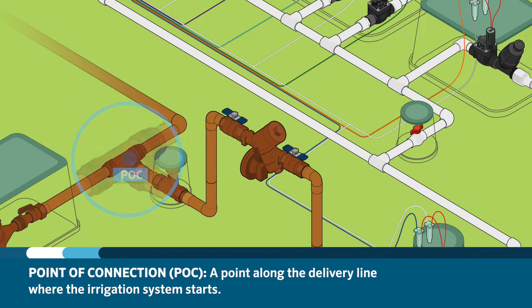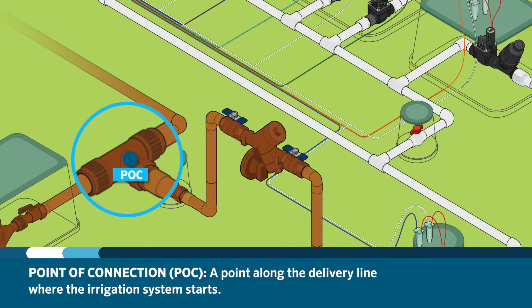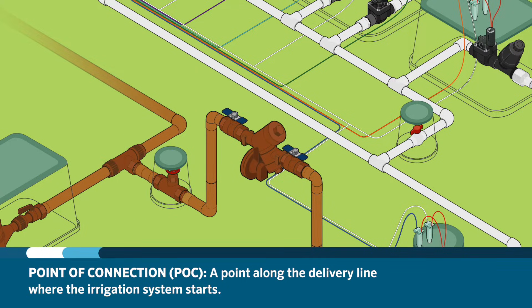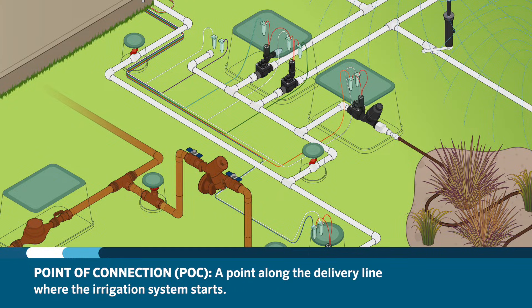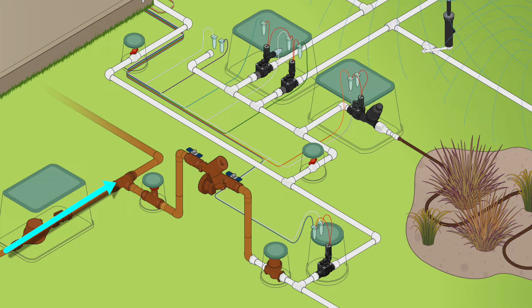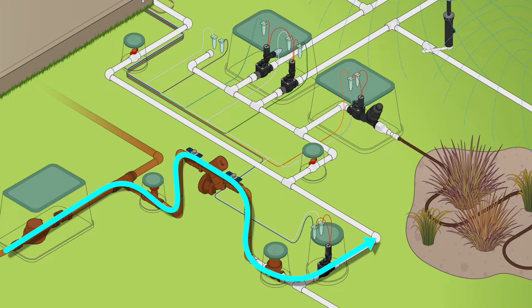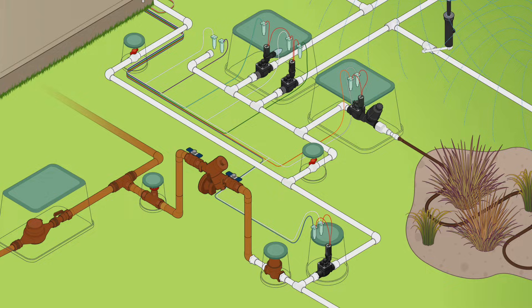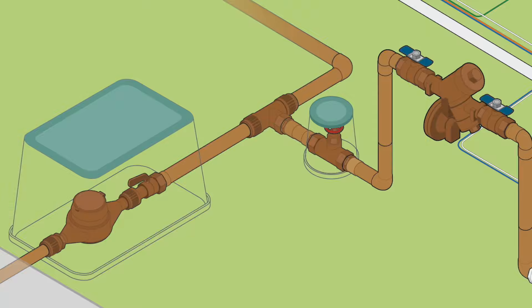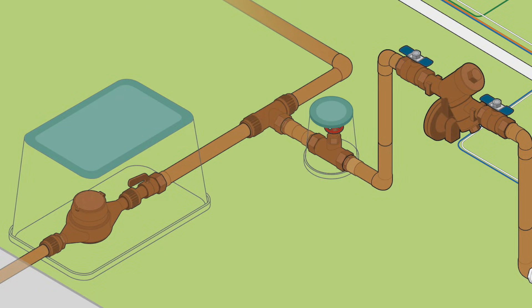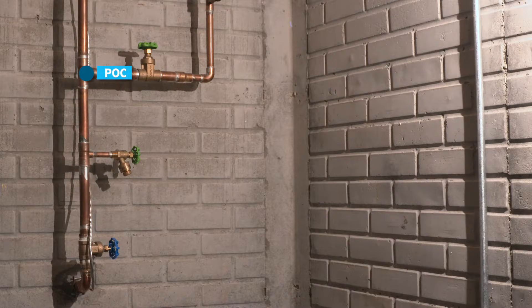After the water meter, the water moves through the delivery line to provide water to the house or building. A point along the delivery line is chosen to be the point of connection, or POC, for the irrigation system. Typically, this is where the irrigation system starts. Water is directed to the irrigation system from the delivery line that supplies water to the home or commercial building. This will be different if the irrigation system has a dedicated water source separate from the meter. In warm climates, the POC is usually before the building, and in cold climates, the POC could be inside the building.